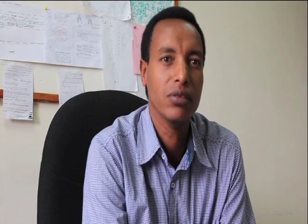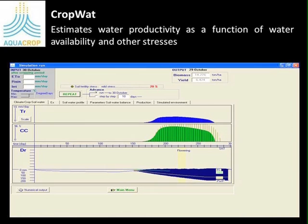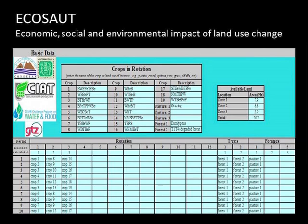When we come to the analytic tools, which allow researchers to understand the processes that take place on the ground, we used hydrologic models like SWAT, through which we understand hydrologic processes like runoff generation and sediment formation. We also used crop water tools to understand crop water productivity in different landscapes. We also used eco-south, which is an economic, social, and environmental impact assessment of land use changes in different landscapes.